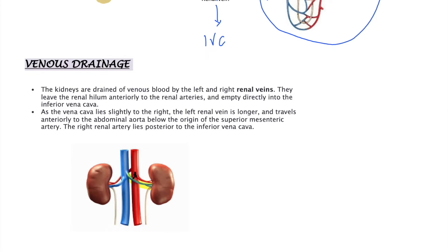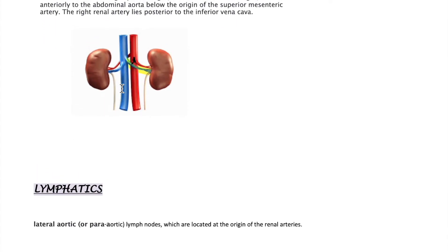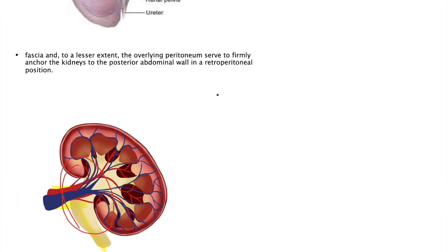For lymphatics, the kidney drains into the paraaortic lymph nodes, present around the origin of the renal vessels. That covers the basic anatomy of the kidney.